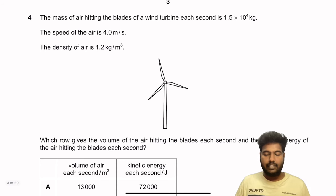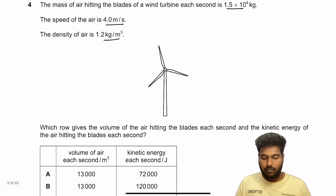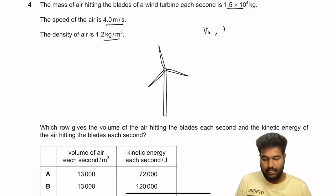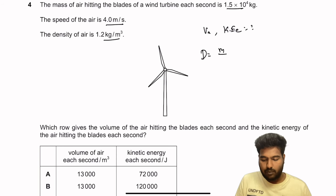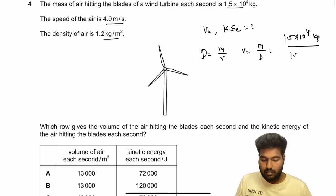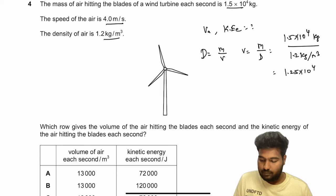Question 4: The mass of air hitting a wind turbine blade each second is 1.5 × 10⁴ kg, speed of air is 4 m/s, density is 1.2 kg/m³. To find volume: V = mass ÷ density = 1.5 × 10⁴ ÷ 1.2 = 1.25 × 10⁴ m³, which rounds to approximately 13,000 m³. So options A and B are viable.